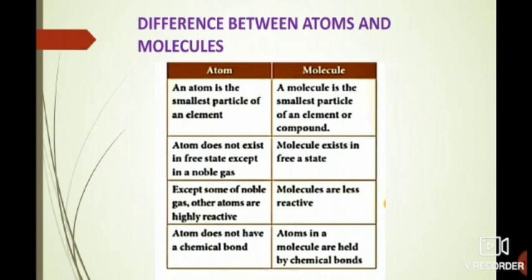Except for some noble gases, atoms are highly reactive in chemical reactions. But molecules are less reactive in chemical reactions. Atoms do not have chemical bonds, but atoms in molecules are joined together with the help of chemical bonds. So molecules contain chemical bonds, but atoms do not contain any chemical bonds.